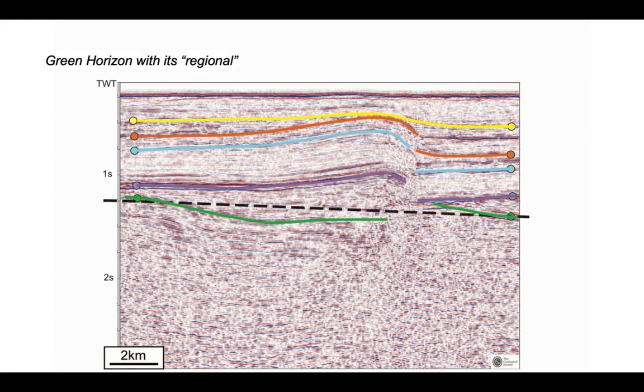this particular horizon has gone down on the left hand side of our inferred fault break here. So the green horizon is dropped below its regional.